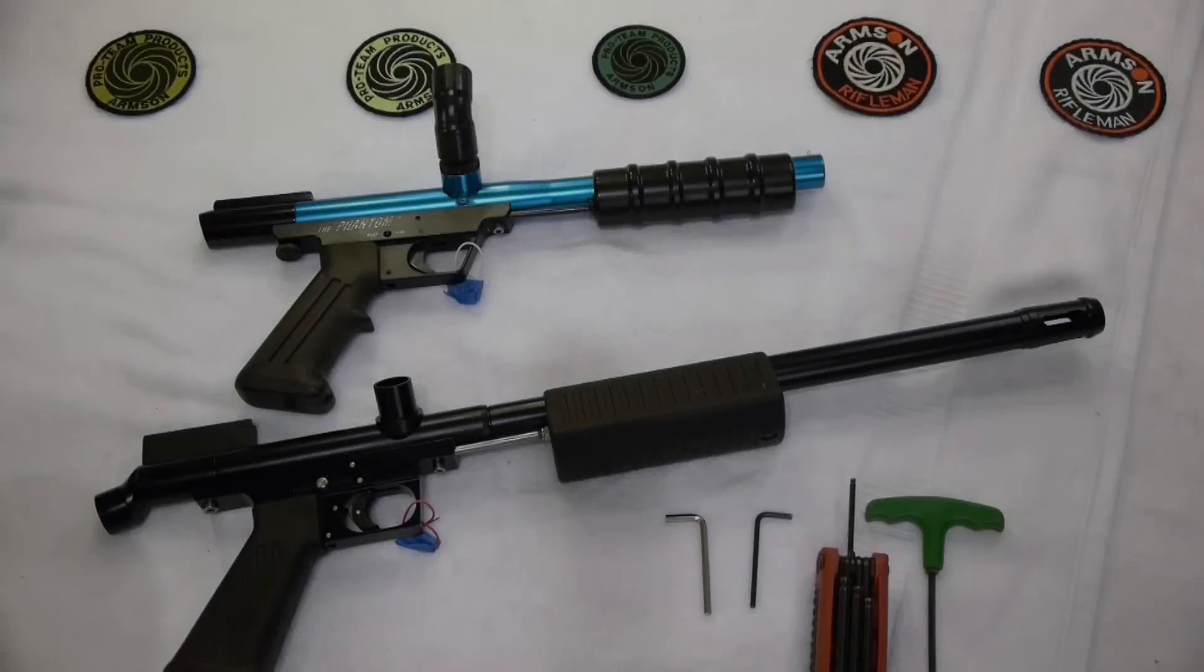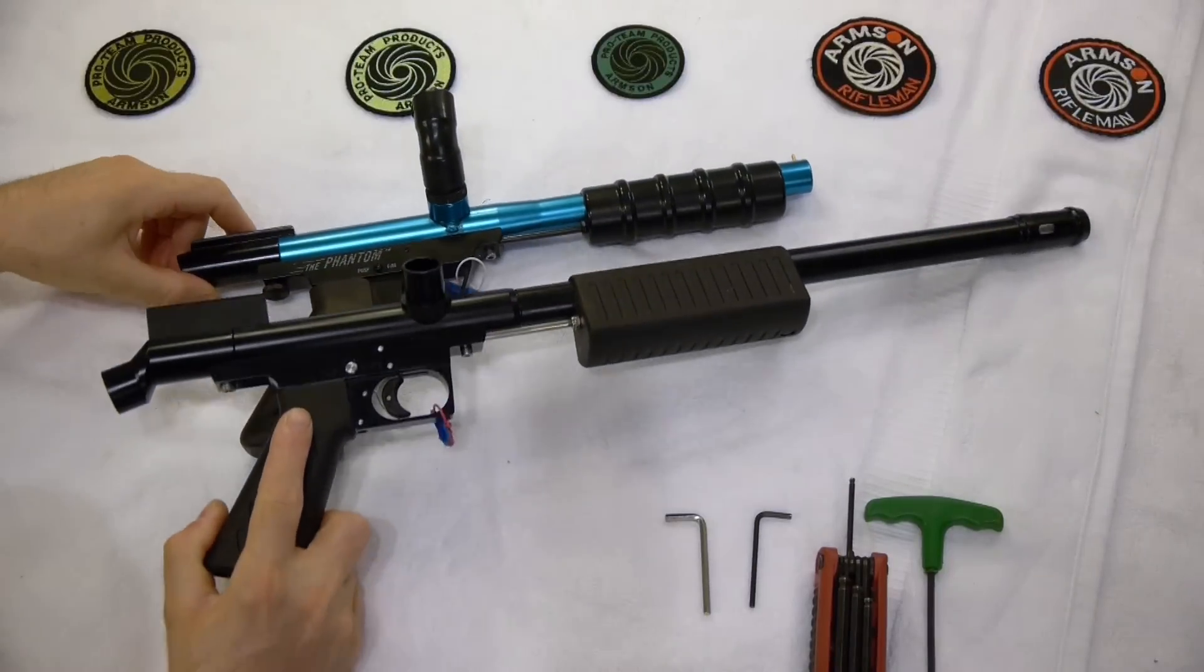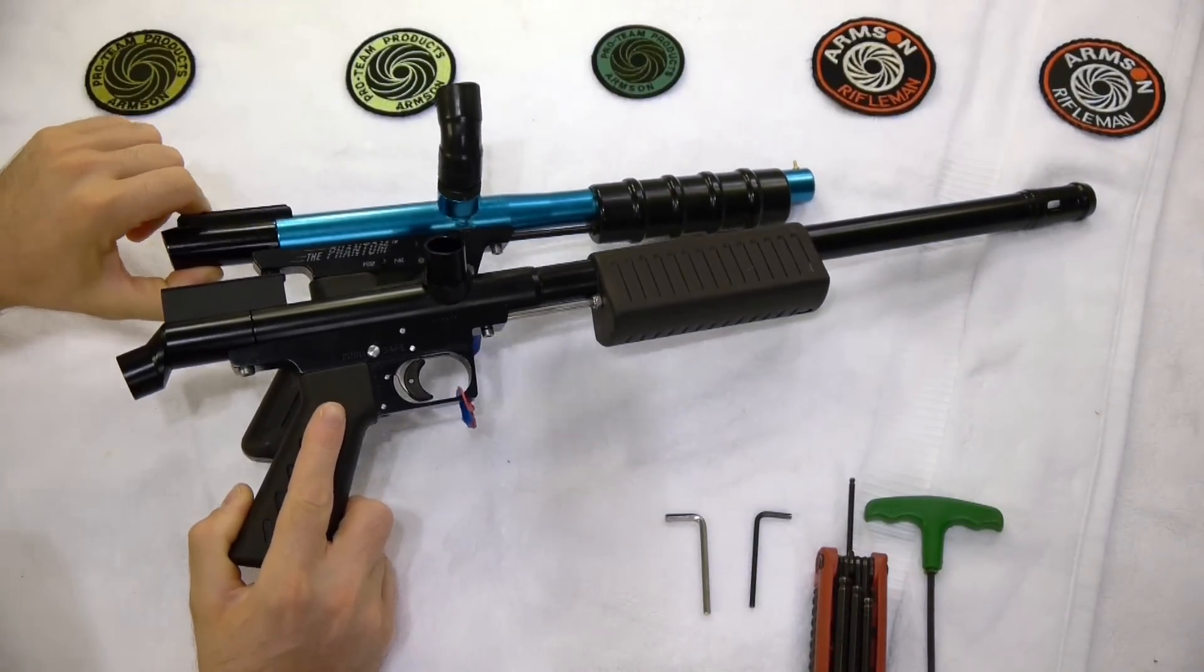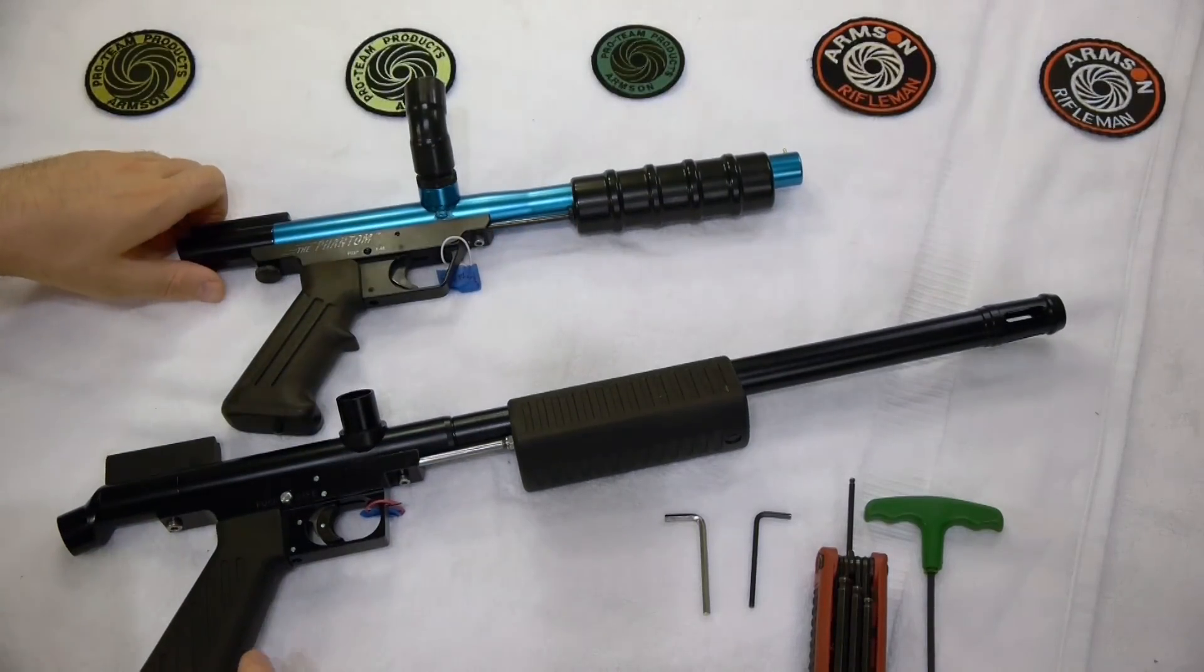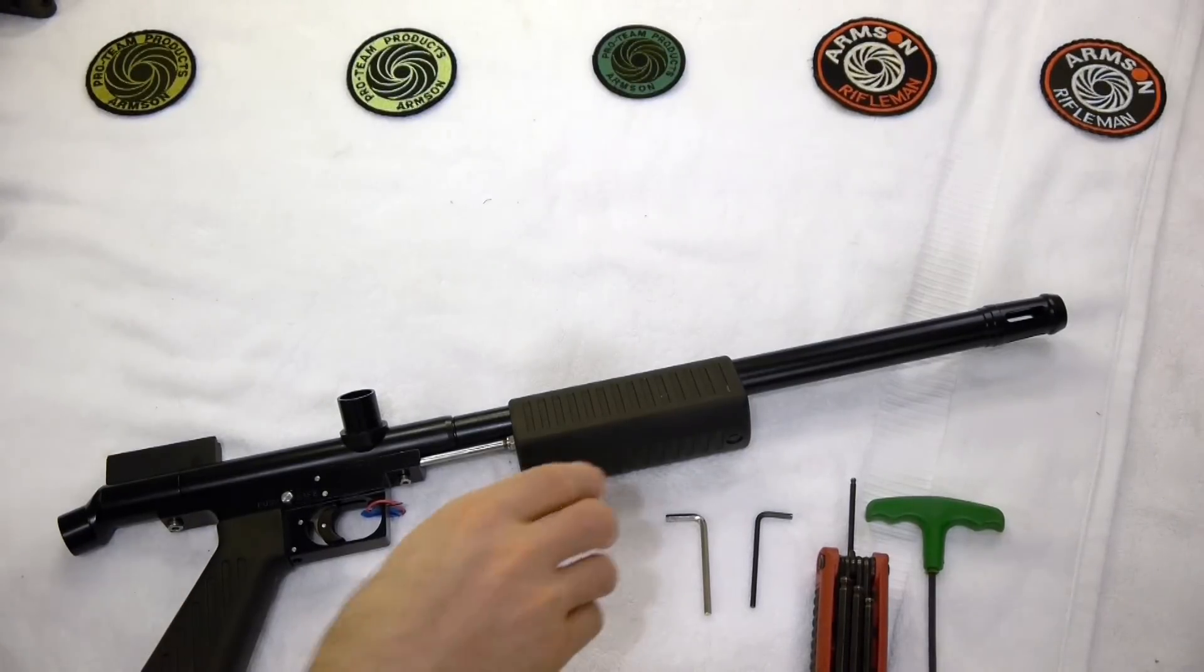Looking at both guns again, you can see that the frames are very similarly spaced and the back bottles also appear to be around the same dimensions. You can see the undercocking rods on both guns, and now we're going to disassemble the Ariakon Assassin.